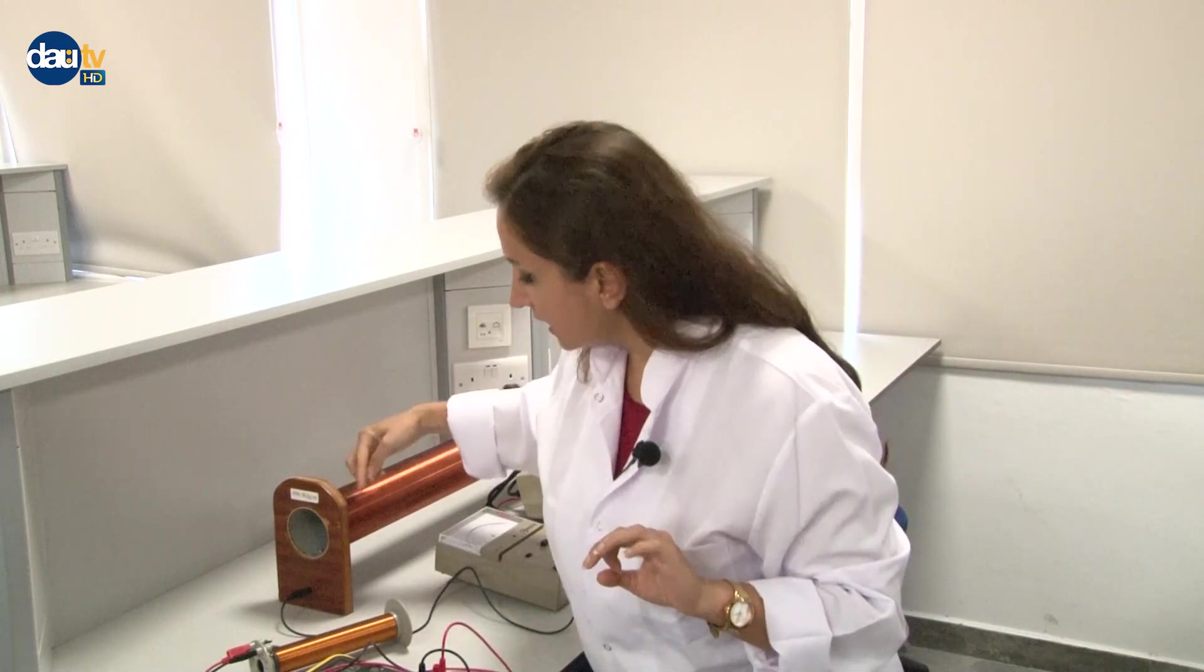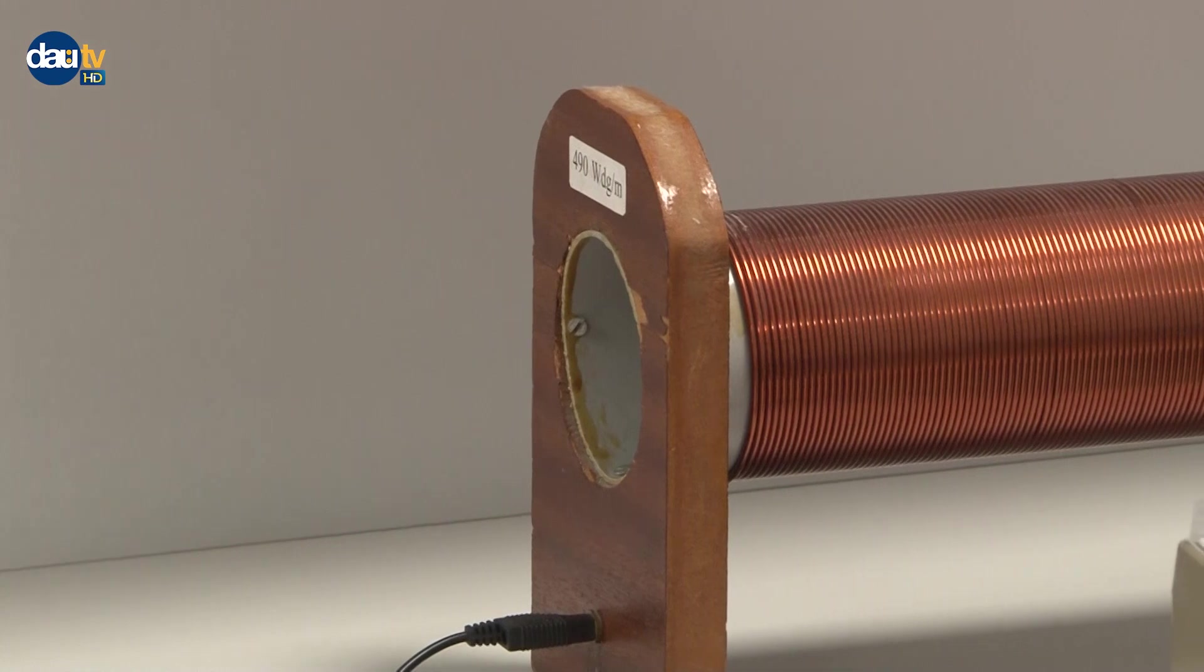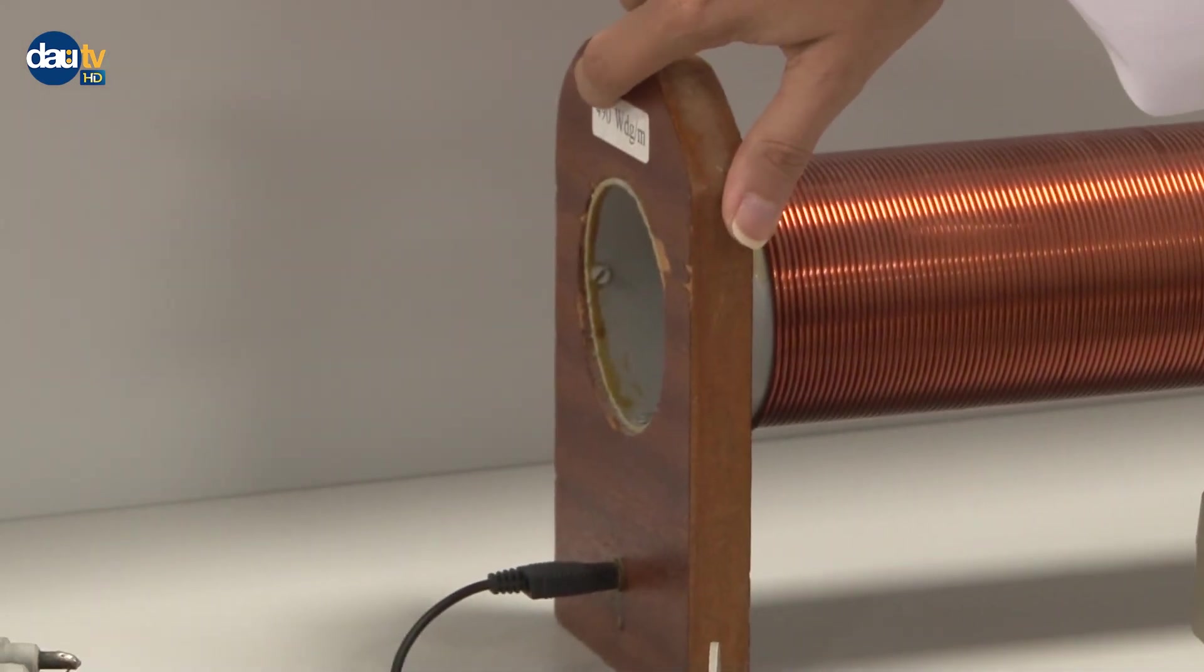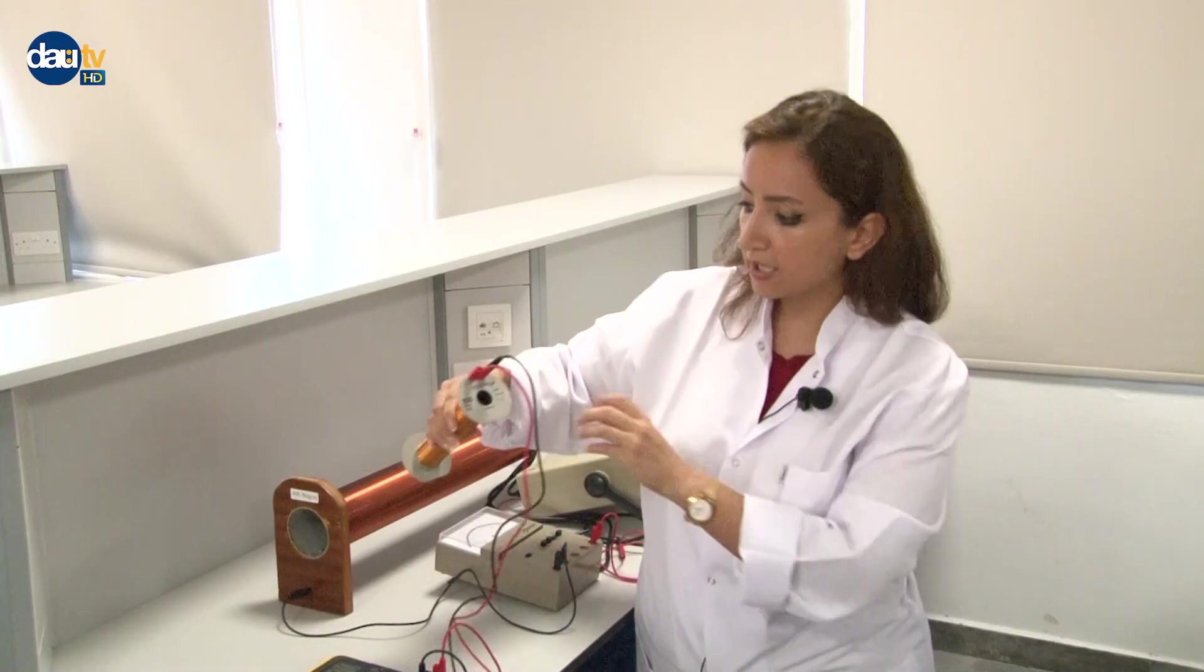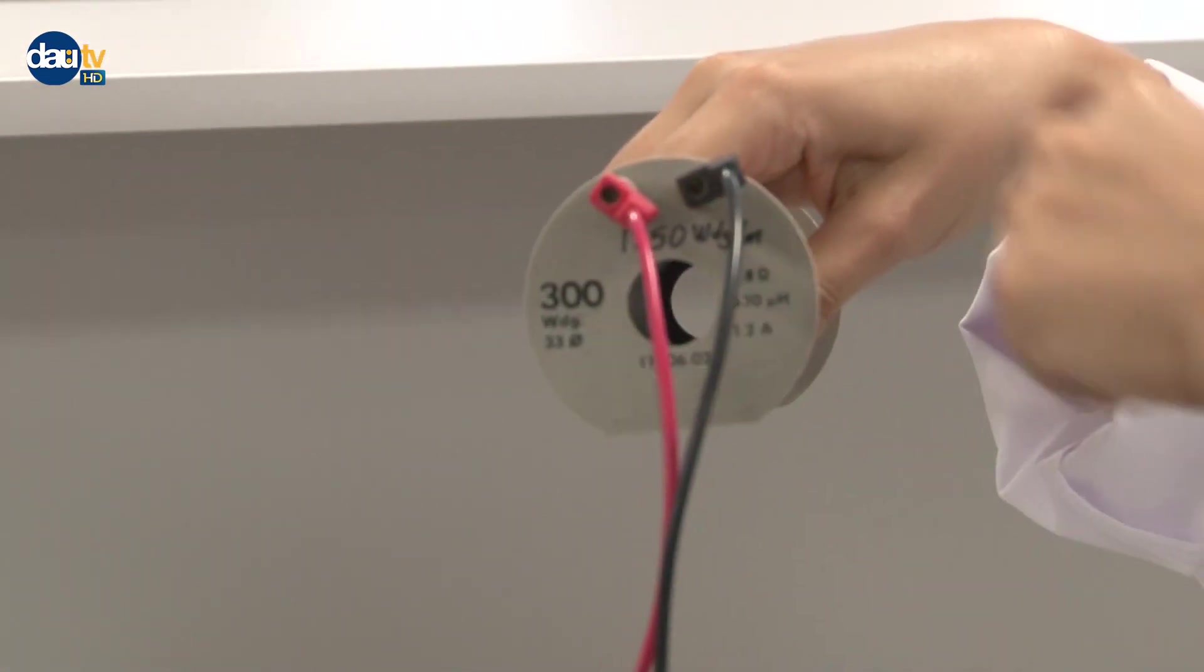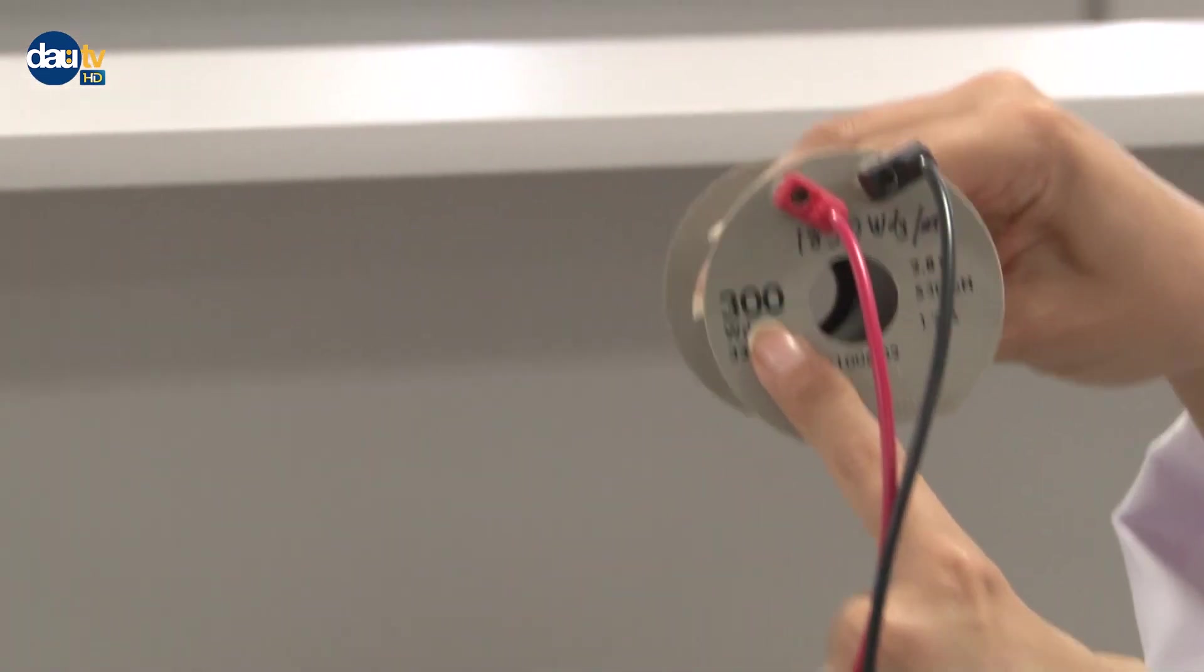What is n1? n1 is the number of wires around the bigger one, so it is 490, which is written on it. And n2 is 300. The number of the wires around this cylinder is 300.